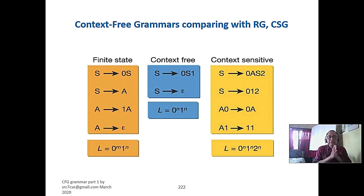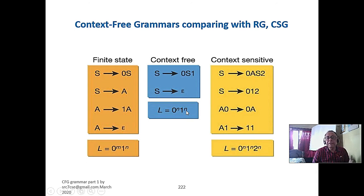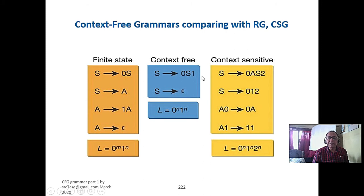This is a regular grammar. But whenever we have a^n b^n - here it is 0^n 1^n - the same grammar with just alphabets changed, but now n must be the same on both sides. The production rule for the start variable S can be 0S1, and S goes to epsilon. With that rule you can generate 0^n 1^n where both n's are the same.